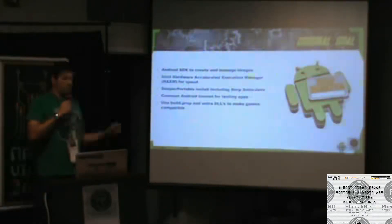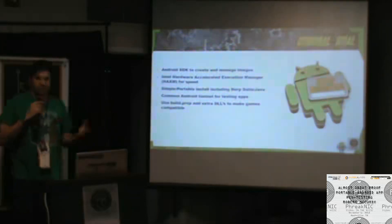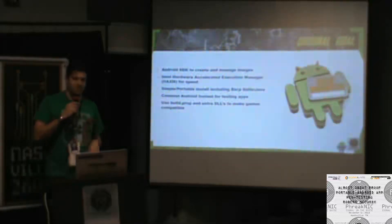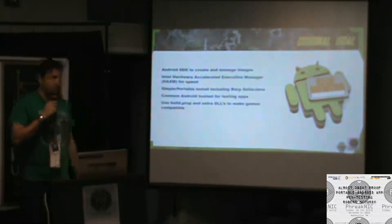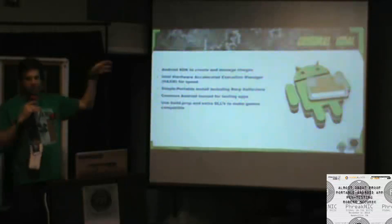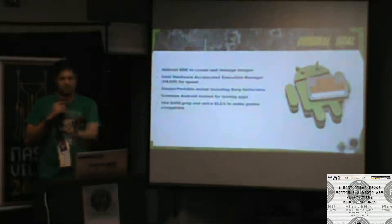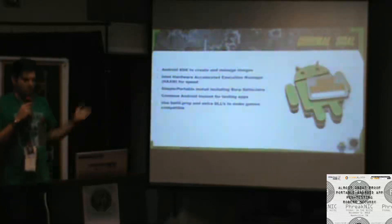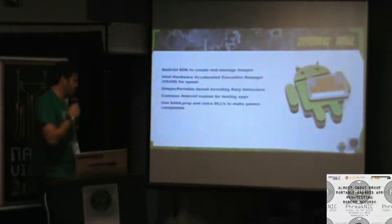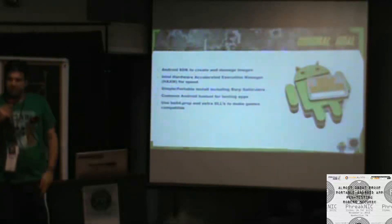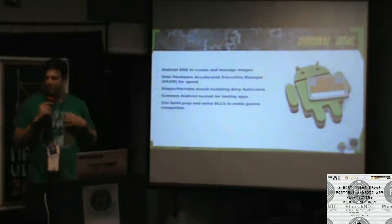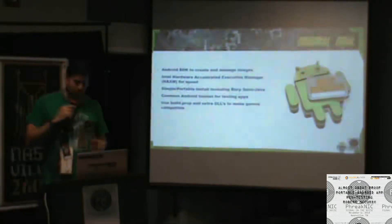The build.prop stuff — essentially the build.prop file in Android tells the Play Store and other Google apps what your phone is, for compatibility reasons. So if I don't want to support a giant display, I can say only support phones this size. Build.prop is still kind of weird, and there's extra DLLs that some of these software packages like BlueStacks hook in to make video and games work a little bit better. I haven't quite figured it all out.